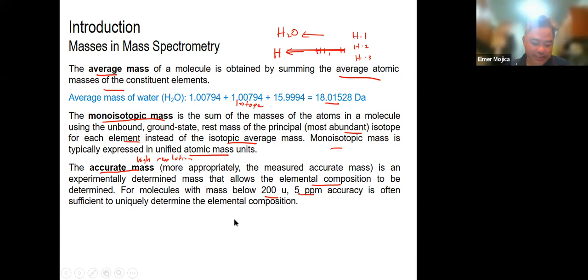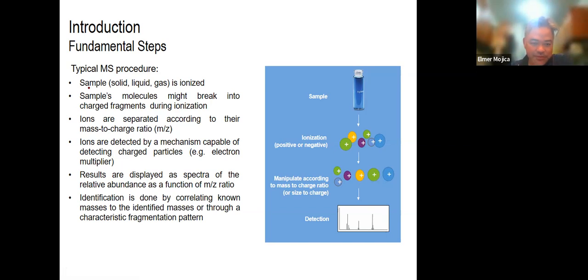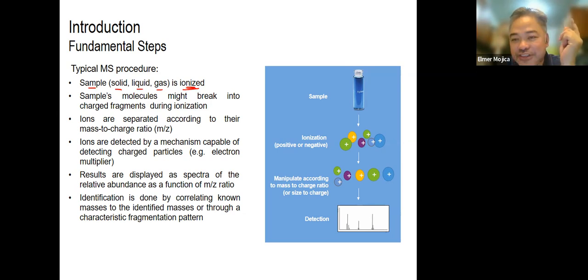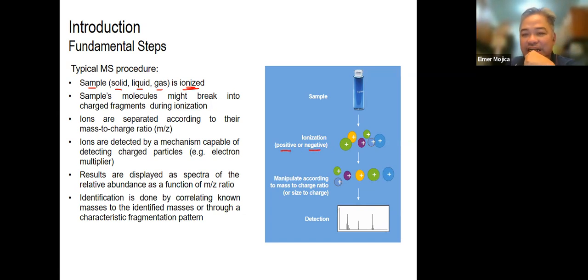Now we'll look at the fundamental steps in any MS procedure — a summary of what the mass spectrometer does. You might have a sample that is solid, liquid, or gas. The main thing is to make it ionized, because the way we determine is by mass-to-charge ratio. When you ionize, you're essentially charging it. The ionization of your sample can result in either a positive or a negative ion — that's the challenge they faced when developing mass spec methods.